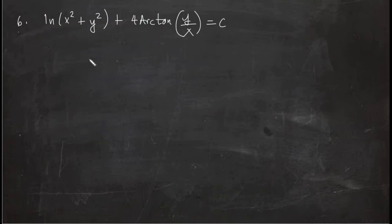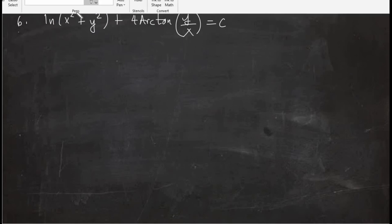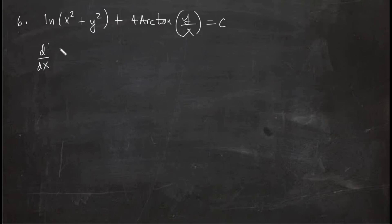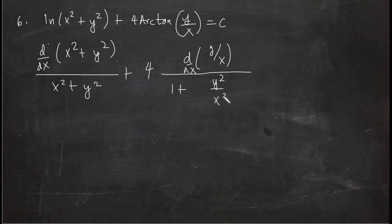For our last example, problem number six involves implicit differentiation combining the derivative of a logarithm and an inverse trigonometric function. Given: ln(x² + y²) + 4 arctan(y/x) = c. Differentiating: the derivative of ln(x² + y²) gives (derivative of x² + y²) over (x² + y²), plus 4 times the derivative of arctan(y/x) using the formula 1/(1 + u²) times the derivative of u = y/x. The derivative of the constant c is 0.